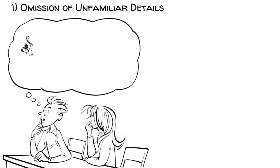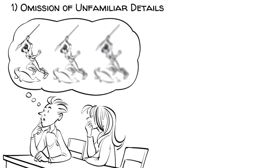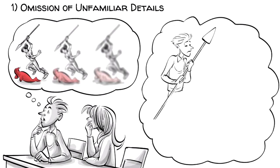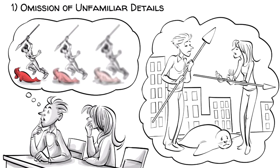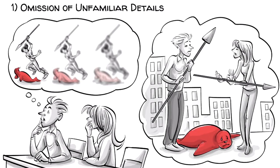1. Omission of unfamiliar details. Multiple students did not recall a part about the Chinooks going hunting seals. This happens because hunting seals does not naturally fit into the cultural context of rich British students. In other words, they do not have an existing schema for this kind of information.